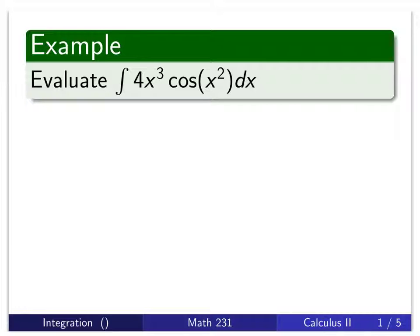Our first example is the integral of 4x³ cos(x²). Now this cosine of x² bothers me, so I want to make an initial substitution for x². Because I know where I'm headed, I'm going to use w as my variable. I'll let w equal x².